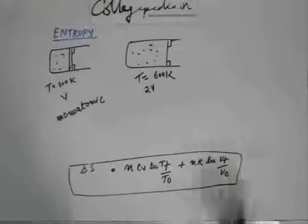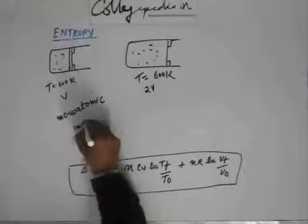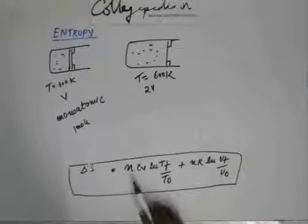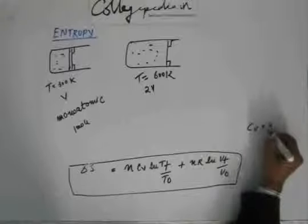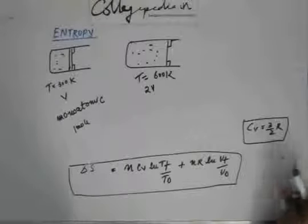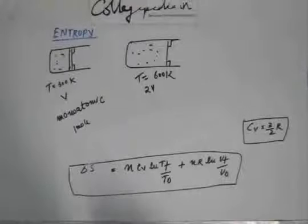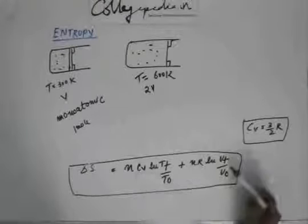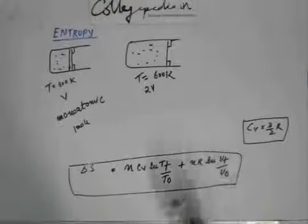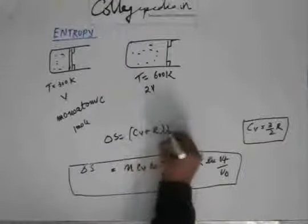For entropy change of an ideal gas we always use this expression. There is one additional piece of information: one mole of gas is present, so n = 1. Cv for a monoatomic gas is 3/2 R — you learn this when studying the gaseous state chapter. Putting in the values, Tf/Ti = 600/300 and Vf/Vi = 2V/V, which simplifies nicely, and you get ΔS = (Cv + R) ln 2.